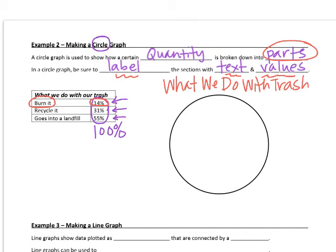So when trash goes out, 14% of it gets burnt, 31% gets recycled, and more than half of it goes into a landfill. So I don't know where this data came from, but let's go ahead and graph it.